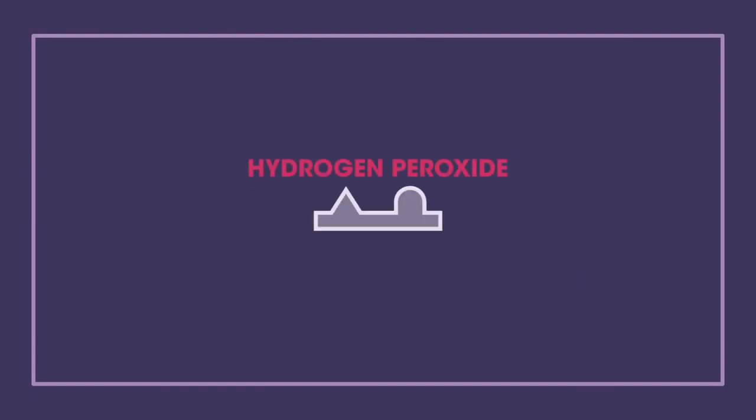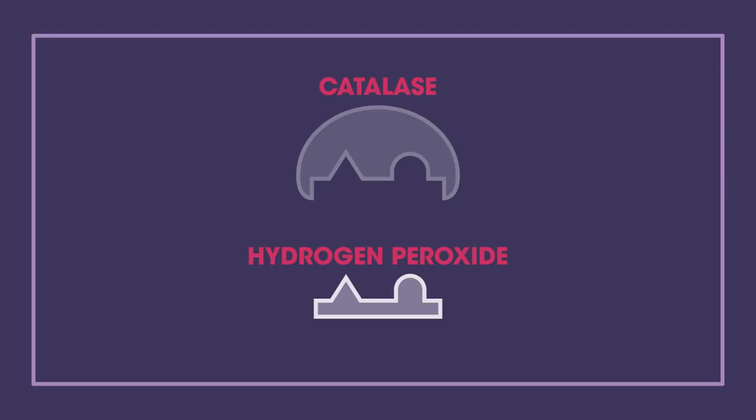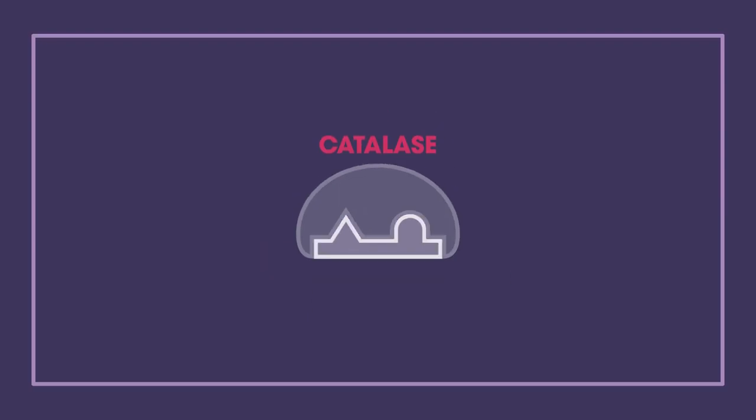Hydrogen peroxide is often formed as a result of the reactions in cells, and if it is left behind to build up, it is harmful. Luckily, we have catalase enzymes that are really fast. They break the hydrogen peroxide down into harmless water and oxygen.